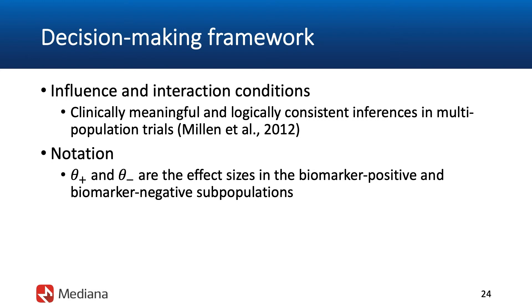The resulting decision rules would guide the process of identifying the most appropriate scientific hypotheses to be tested at the final analysis, and they will ultimately facilitate the interpretation of outcomes in adaptive population selection trials. This decision-making framework relies on two conditions: the influence condition and the interaction condition. These conditions were initially introduced as tools for formulating meaningful regulatory claims for tailored therapies in pharmaceutical development programs, and they are easily extended to an adaptive design setting to identify the most relevant scientific hypotheses tested at the final analysis based on results available at the time of an interim assessment.